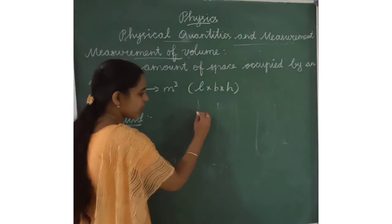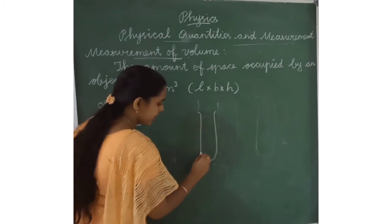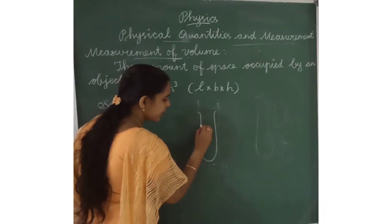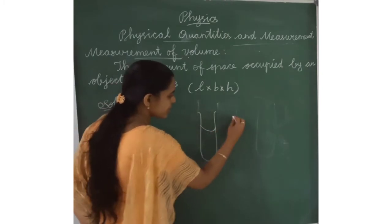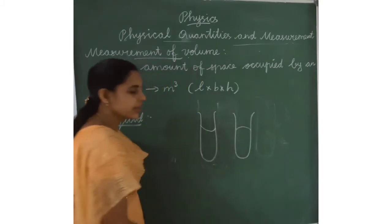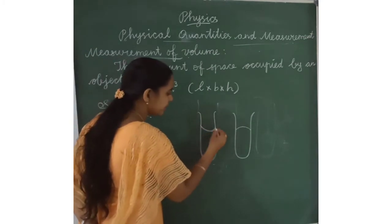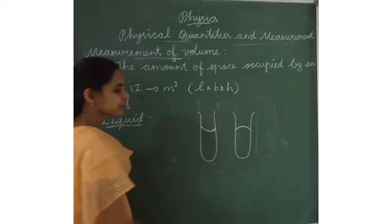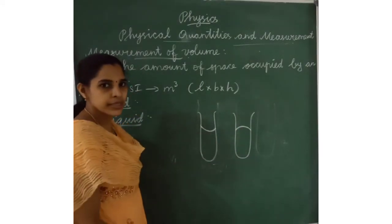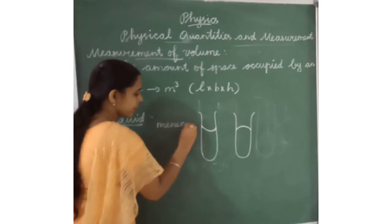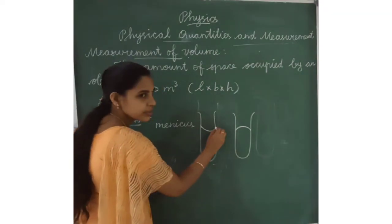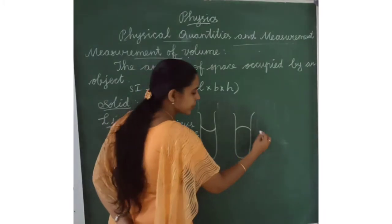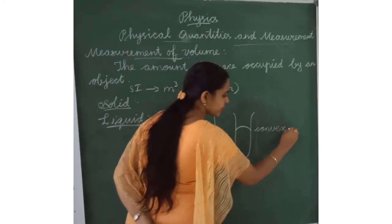When we pour water or any liquid into the measuring cylinder, we can sometimes find a curve at the surface of the liquid. This curve is called a meniscus. When the curve goes downward, it is called a concave meniscus. When the curve goes upward, it is called a convex meniscus.